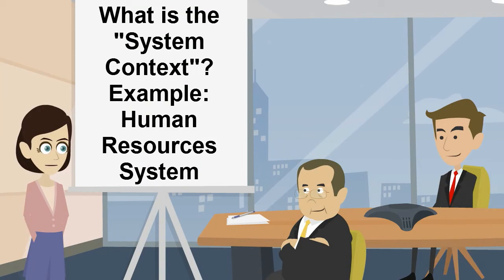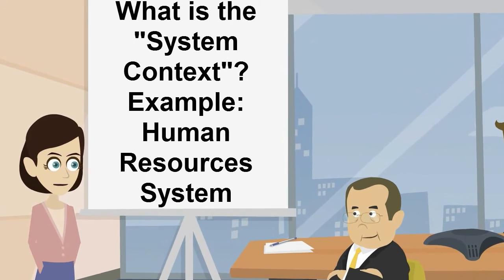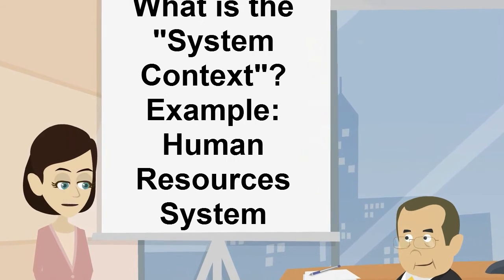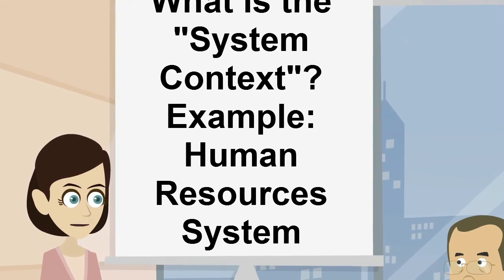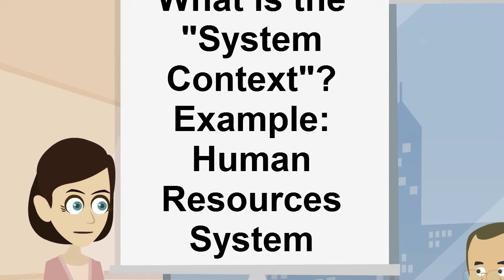Let's start with what we mean by the concept of system context. The easiest way to understand this is to consider an example. Let's say we hear that the Human Resources Department wants to implement a new human resources management system. The definition of the system context in this case is influenced by a variety of different aspects within the human resources arena.